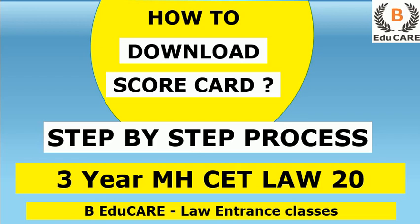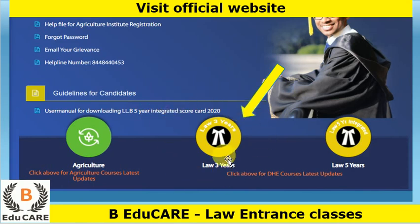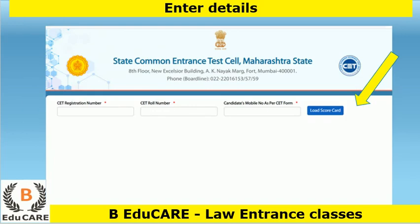You have to visit the official website of Maharashtra CET Law. Over here you can see 'Law 3 Years', so you have to click on this. Once you click on this, you can see 'Download your LLB 3-Year Integrated Course Scorecard 2020', so you have to click on this.